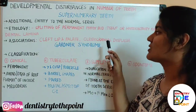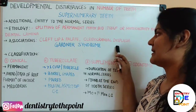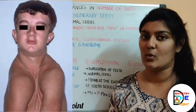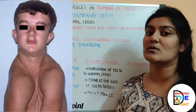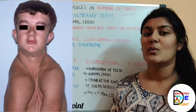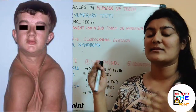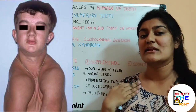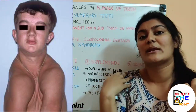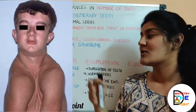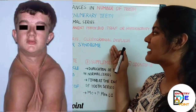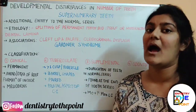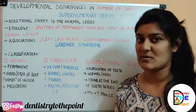The second close association is with cleidocranial dysplasia. This is a deformity of the bone where the clavicle bones are defective, allowing the person to bring his shoulders close to each other. In this condition, supernumerary teeth are also commonly associated.